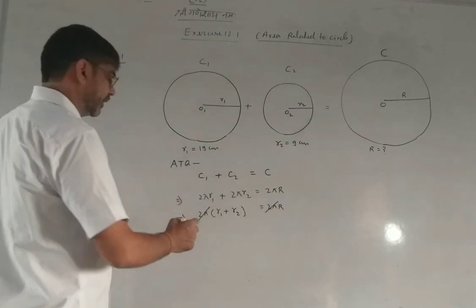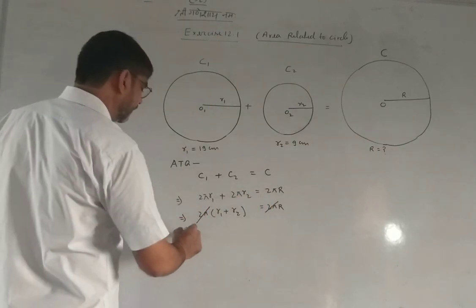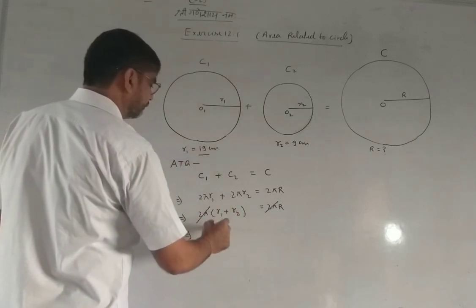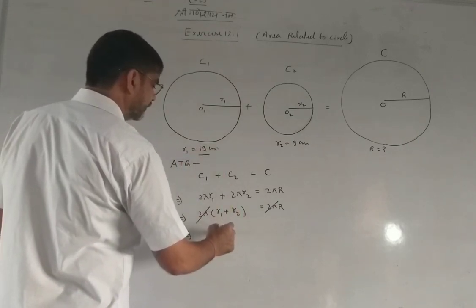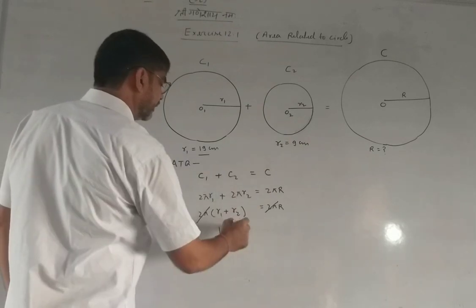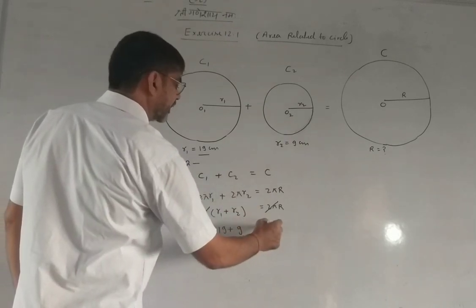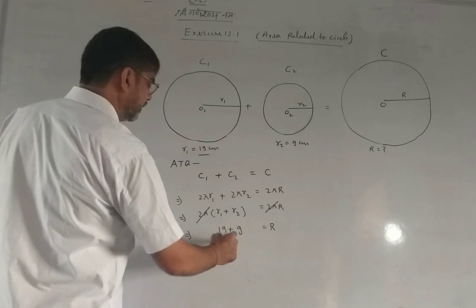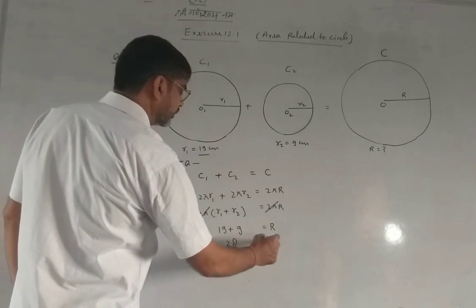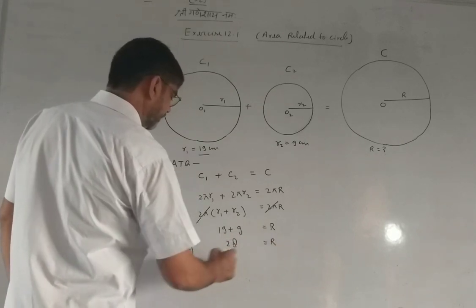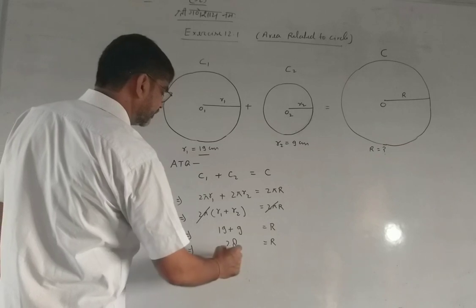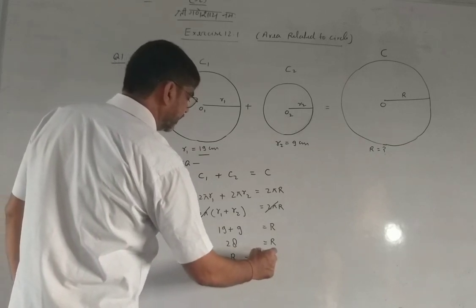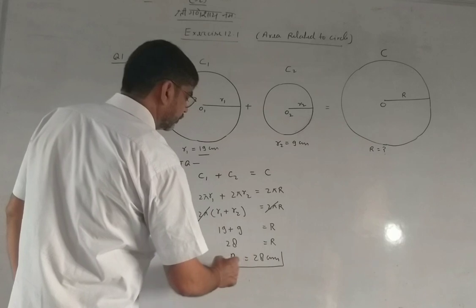Now you can substitute R1 and R2 values. R1 plus R2 equals capital R. This gives R equal to 28 cm.